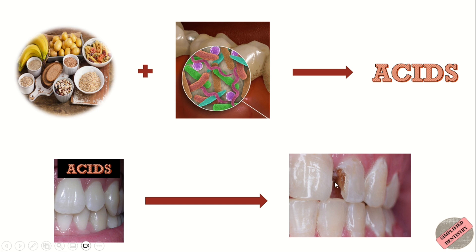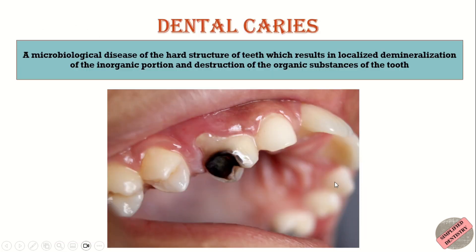Dental caries can be defined as a microbiological disease of the hard structure of teeth which results in localized demineralization of the inorganic portion and destruction of the organic substance of the tooth. It can be classified based on various factors including the location, extent, rate of progression, age pattern, pathway of progression, and the surfaces involved. Now let's have a look at the classifications of dental caries in detail.